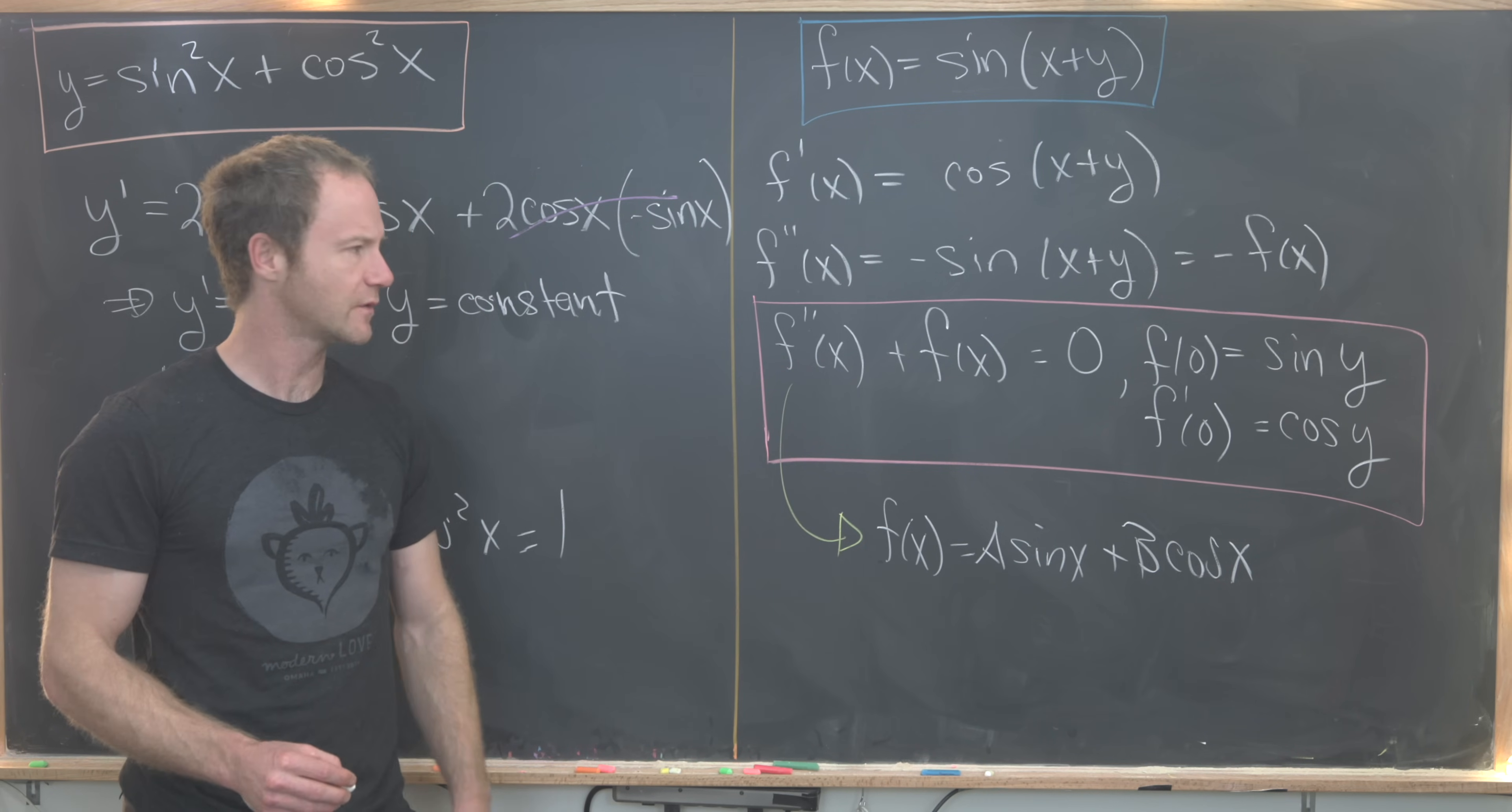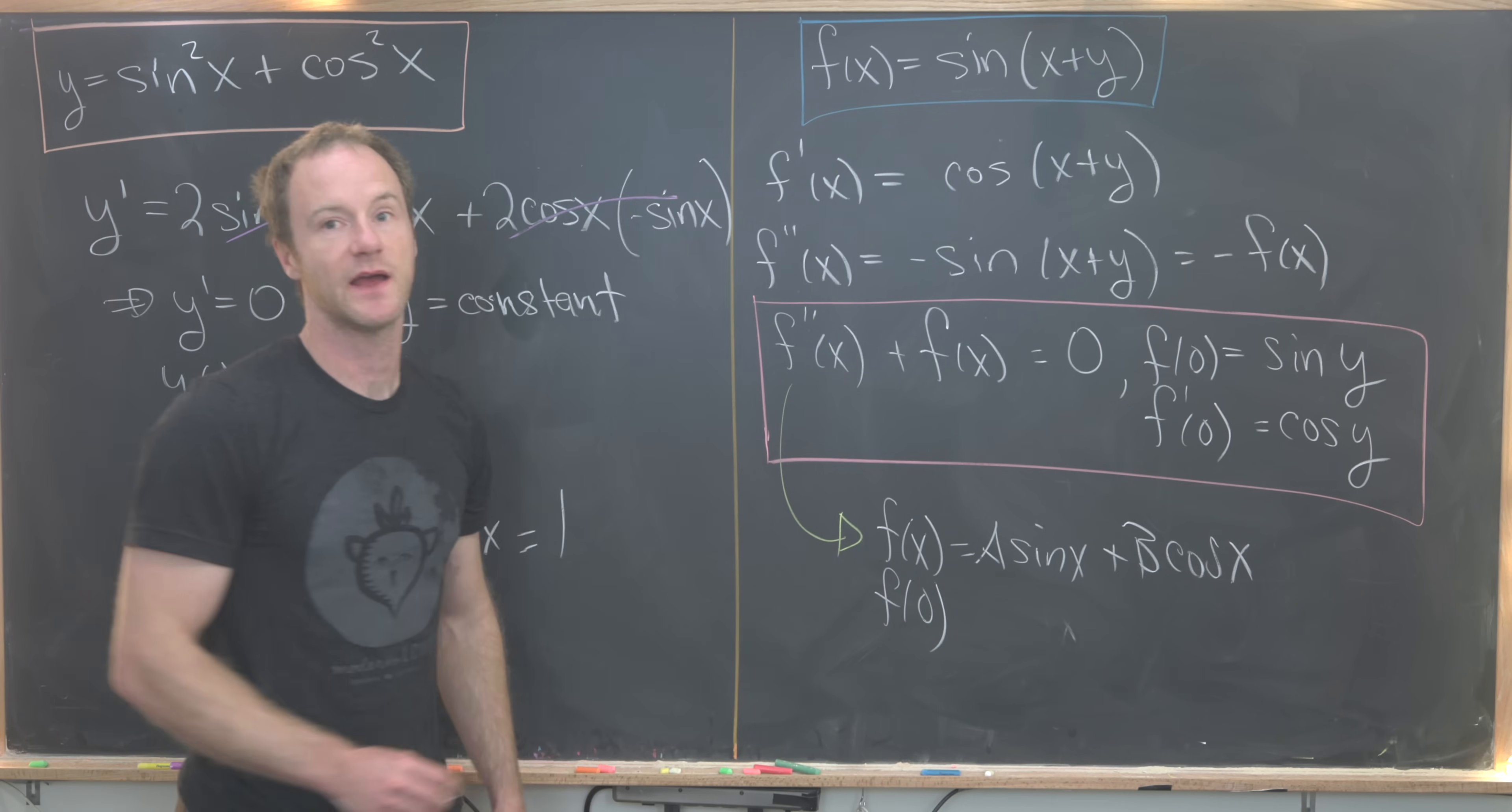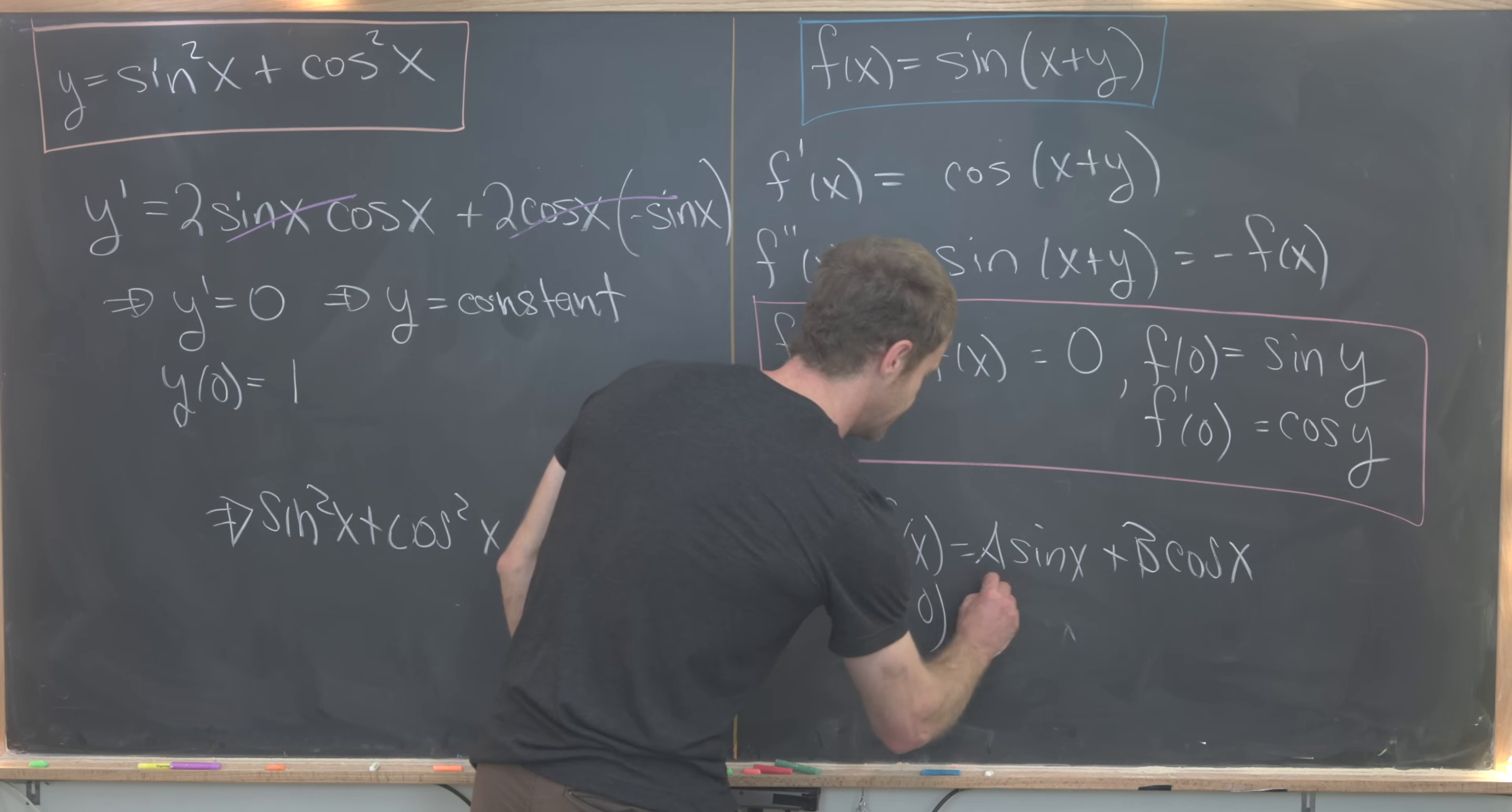Where can we go from here? We can evaluate it at zero and use this initial condition. On one hand, f(0) = sin(y), but on the other hand it's A sin(0) + B cos(0), or just B. So we have B = sin(y).